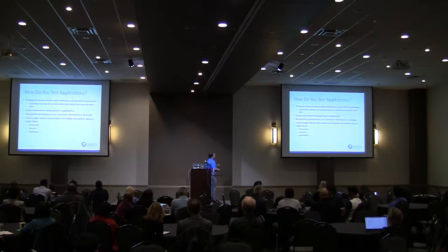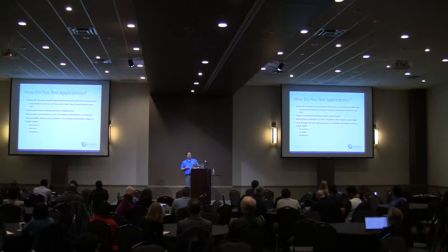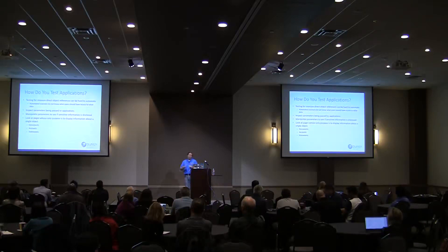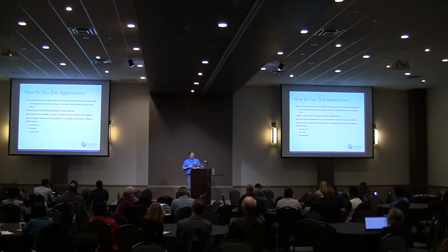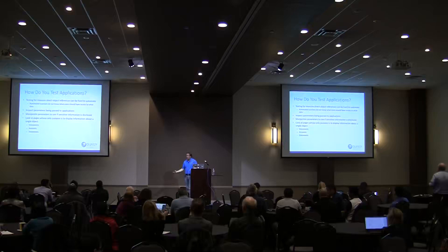So how do we test applications for this? This can be hard to automate, because automated scanners are really request and response based — feed some data in, get the response back. If the response is weird, you know that's a problem. But if I'm feeding in a file name or an ID parameter, I don't know what that response should look like. How does a scanning tool know the difference between statementID 3 and statementID 17? The answer is: it doesn't.